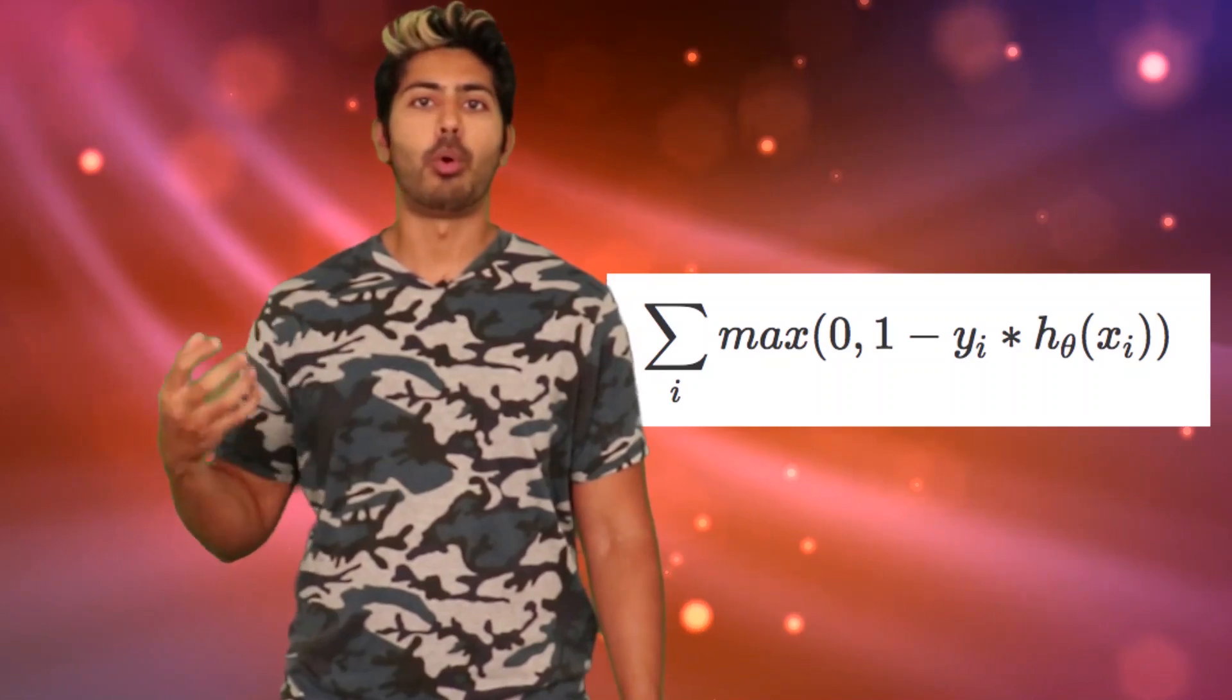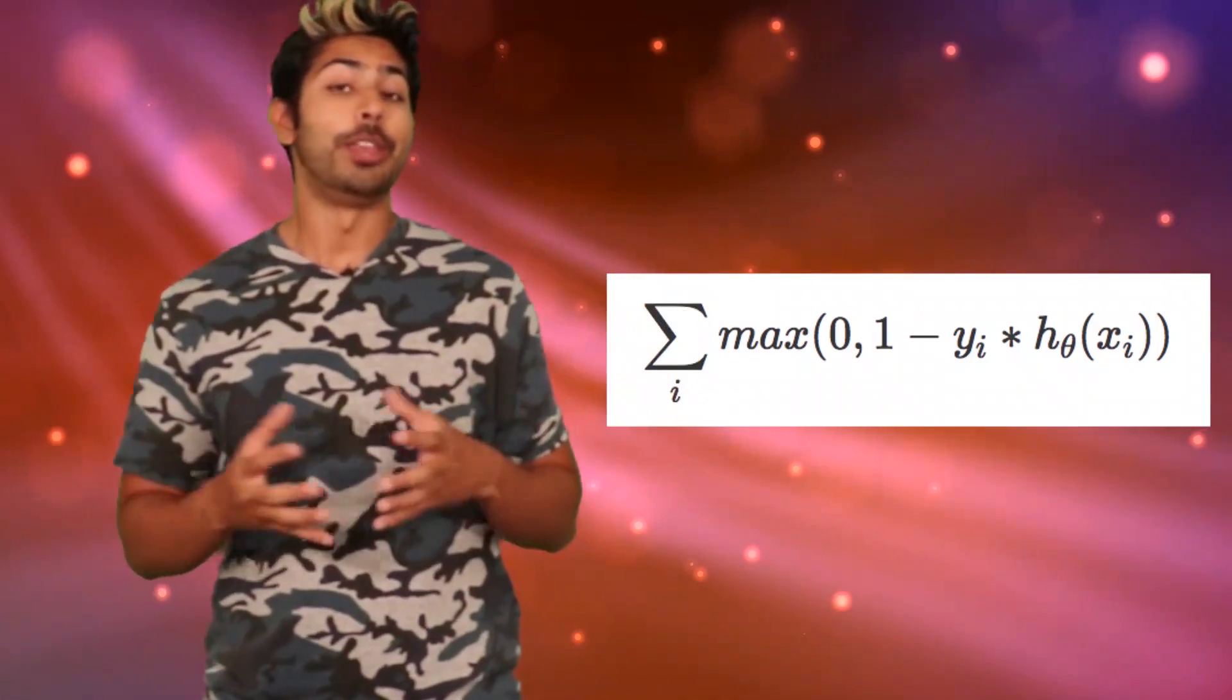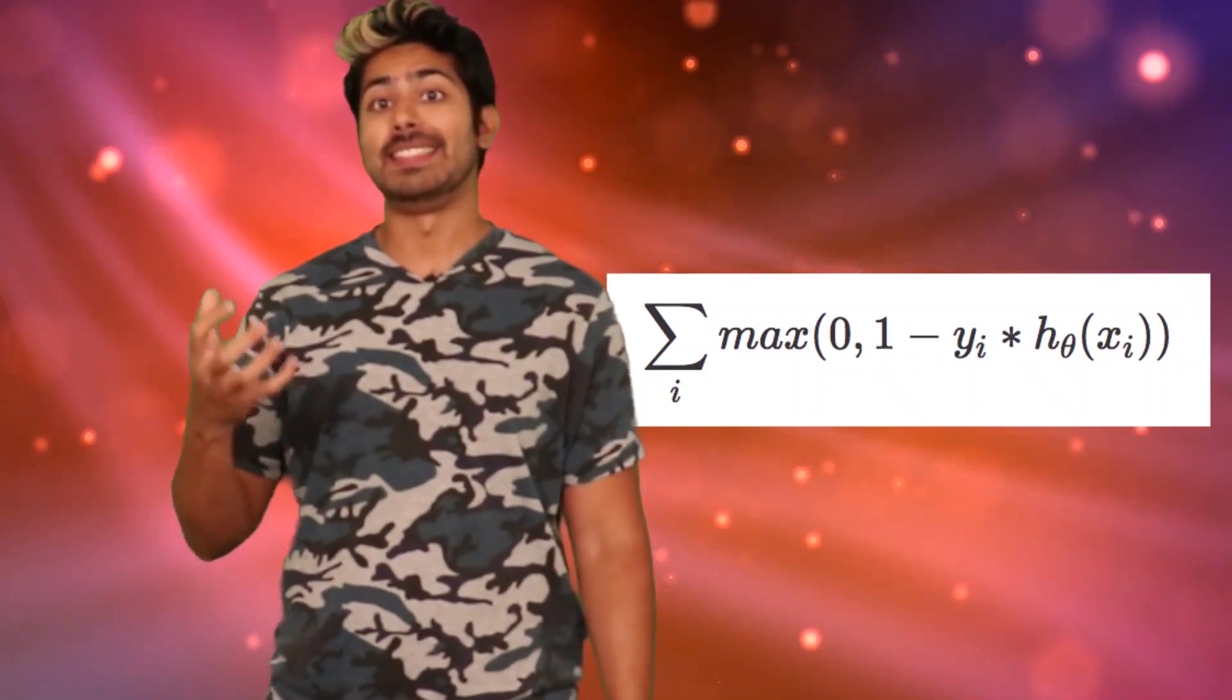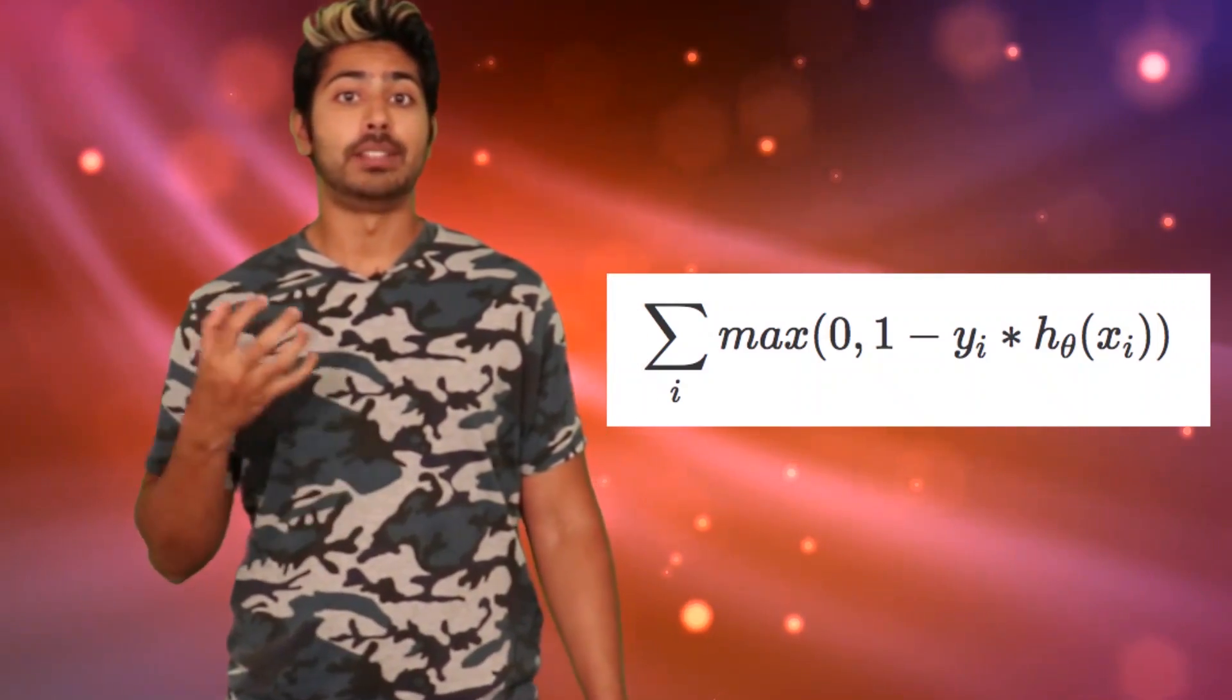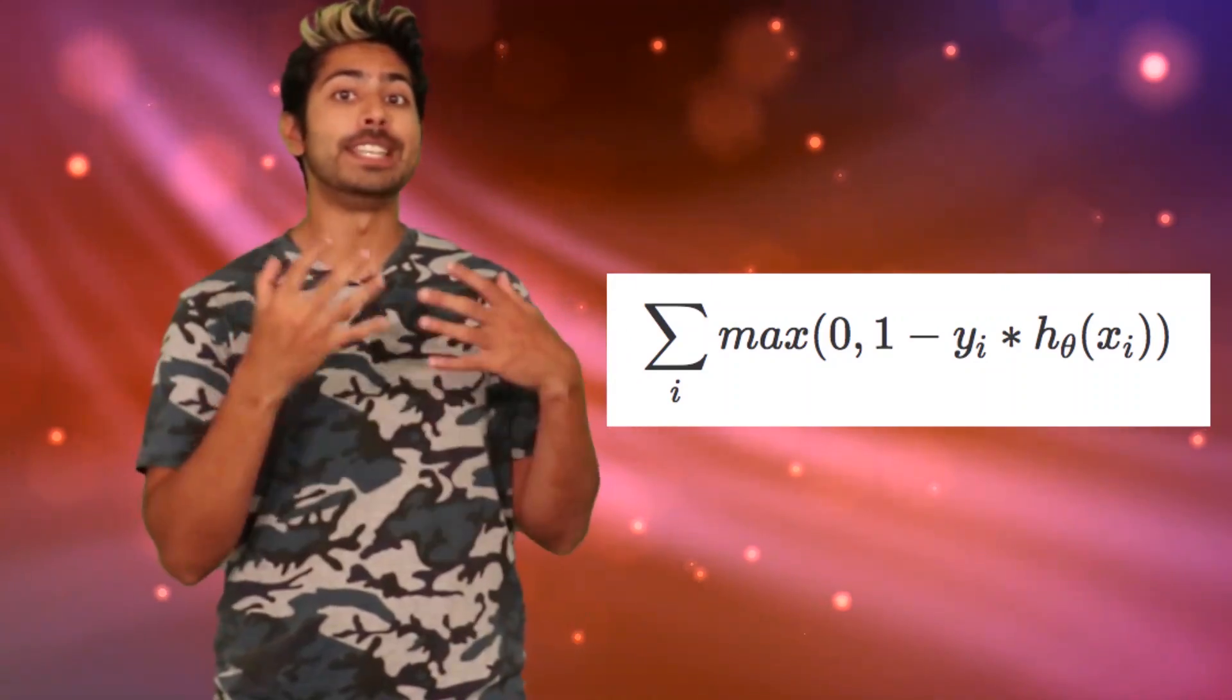For example, if our score for a specific data point was 0.3 but the label was negative 1, we'd get a 1.3 penalty. If our score was negative 0.8, as in this instance, was predicted to have labeled negative 1, we'd still get a penalty of 0.2, but if we predicted negative 1.1, we'd get no penalty.